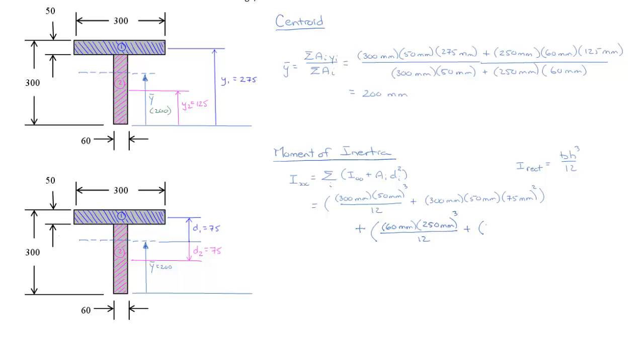Now its area is 60 mm multiplied by 250 mm, and d2 is 75 mm, which would be squared, all in brackets.